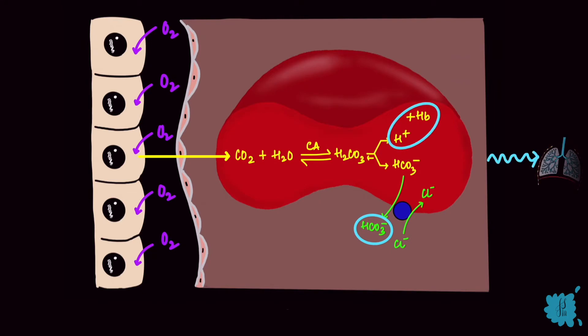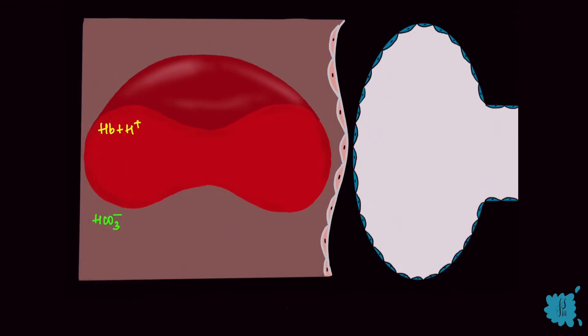Here oxygen is diffusing from the alveolus into the capillary. The oxygenation of hemoglobin promotes dissociation of the hydrogen ions from hemoglobin, because hemoglobin wants to take up oxygen. The bicarbonate enters the RBC in exchange for chloride.